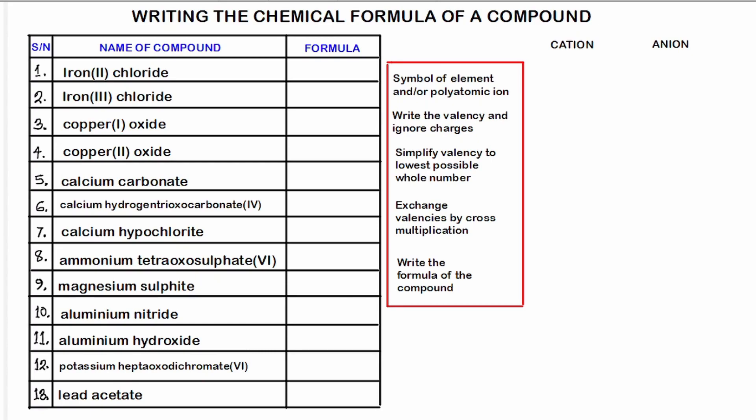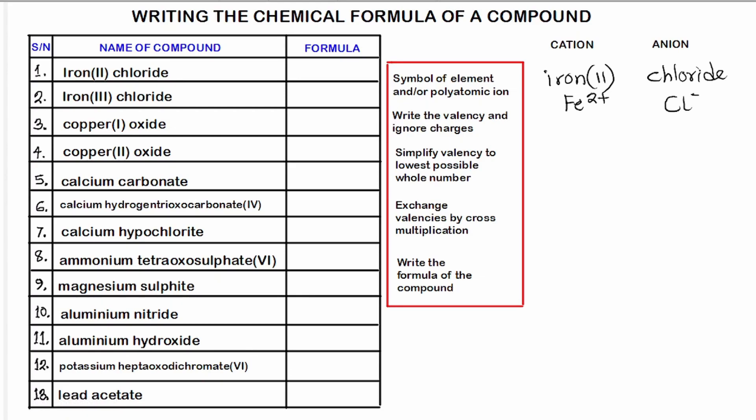Number one: write the chemical formula of iron(II) chloride. Applying the rules in the red box, we identify two components — the cation is iron(II) and the anion is chloride. The symbol for iron(II) is Fe²⁺ while the chloride ion is Cl⁻.